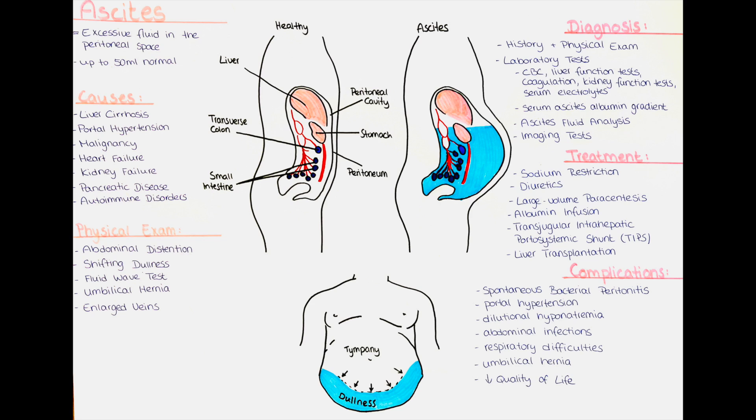Ascitic fluid provides a favorable environment for bacterial growth. Spontaneous bacterial peritonitis is an infection of the ascitic fluid without an evident source of infection. It is a serious complication that can lead to sepsis if not promptly diagnosed and treated.